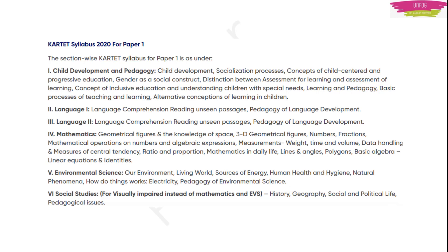Social studies is a replacement of mathematics and environmental science for visually impaired people. If a candidate is visually impaired and cannot see properly, then that person will have to write only social studies — no mathematics and environmental science for them. Normal people should write mathematics and environmental science. So basically, there are five parts up to environmental science, and only visually impaired people will replace maths and environmental science with social studies, giving them four parts.